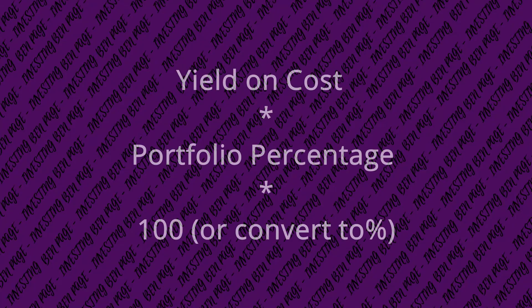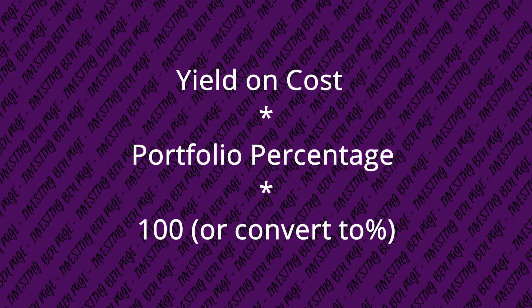Once you've got this information it's quite easy to proceed. All you do is you take the dividend yield of the company times it by the weighting of the portfolio — so the section of the portfolio that that company takes up. This will give you a value that you then express as a percentage, and if you go through and do this to every single company in the portfolio and add them all together, you should come to the total dividend yield of your portfolio.